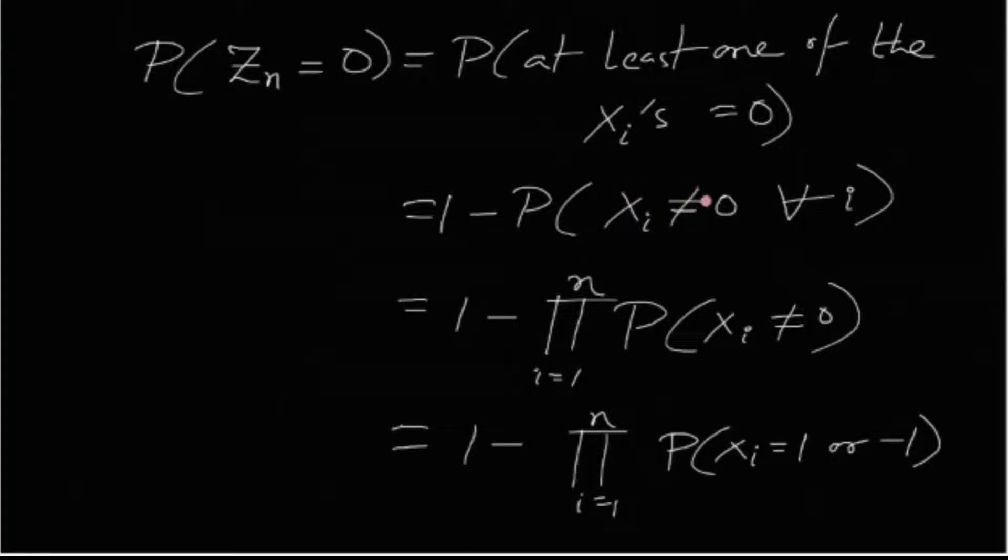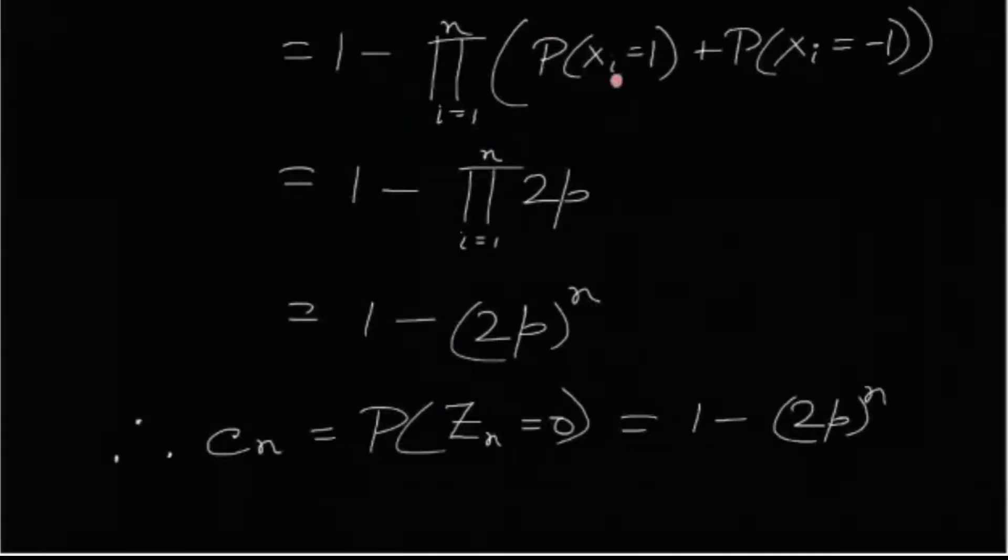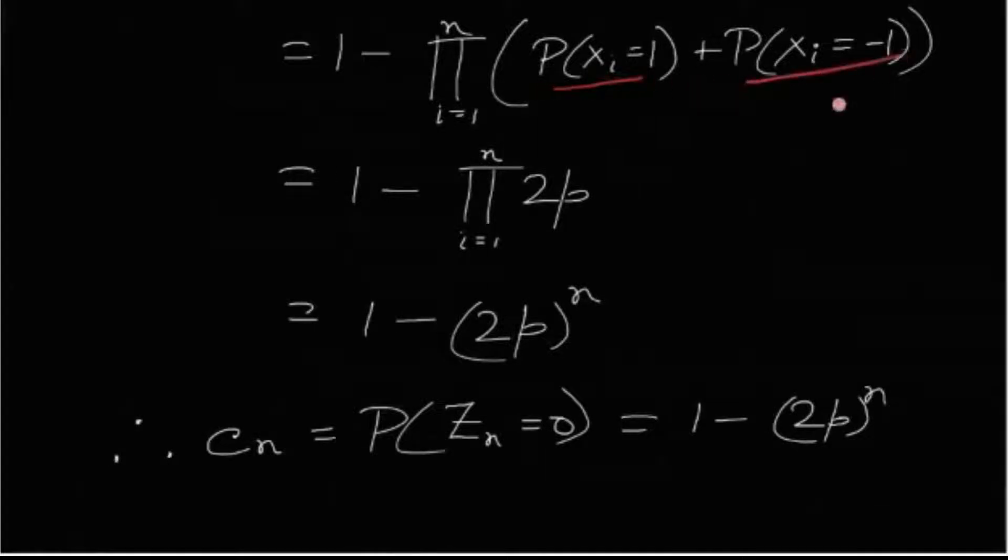So none of them being 0 means each of them being either 1 or minus 1. Again, since they have the equal probability of p and p. This is also p and this is also p that means 2p and here we have the sum, the entire answer.